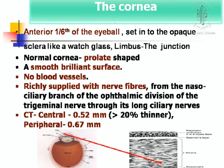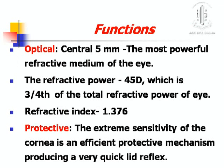It has a smooth, brilliant surface, having no blood vessels, but richly supplied with nerve fibers. Central corneal thickness is 0.52 mm and peripheral is 0.67 mm. It has two functions: optical and protective.